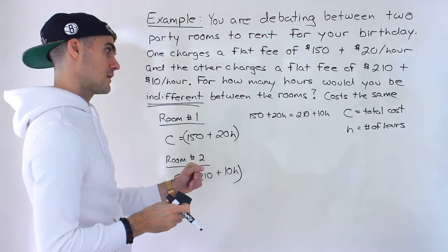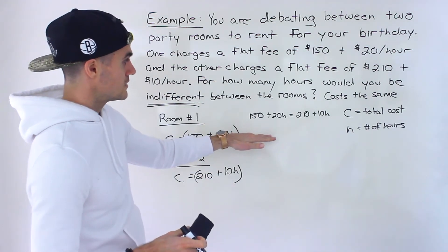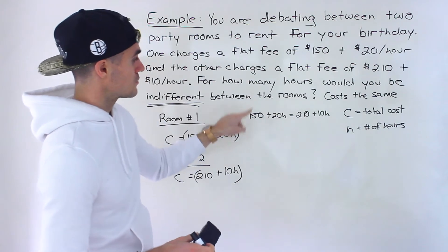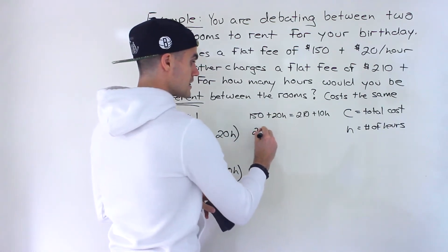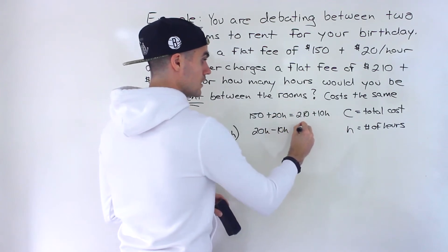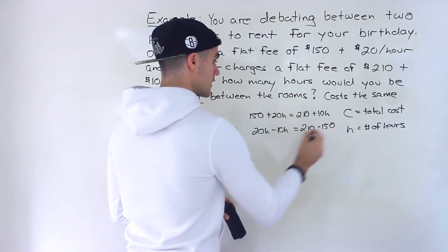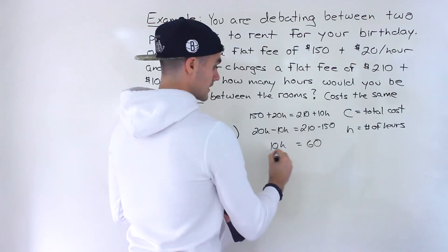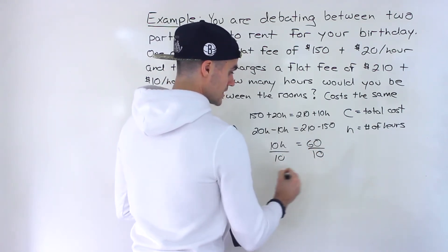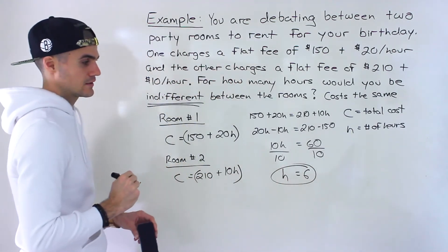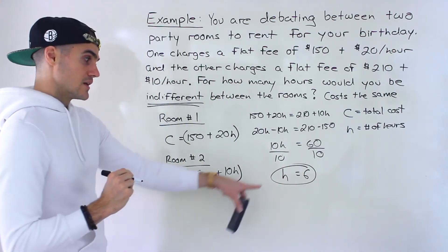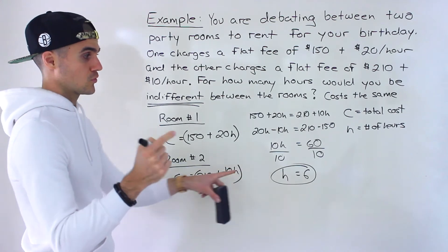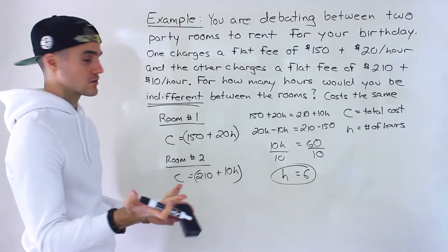So what I'm going to do is I'm going to bring all of the variables to the left side, just to keep it positive. We have a 20 here and a 10. So when we bring the 10 over, we'll have 20 minus 10. And then all the numbers I'll bring to the right side. So we'll have 20h minus 10h equals 210. The 150 comes over, it becomes a negative. This would be 10h. This here would be 60. Divide by 10. H is equal to 6. So this here represents the number of hours you'd have to rent both rooms for the costs to be the same. That's the answer to the question.